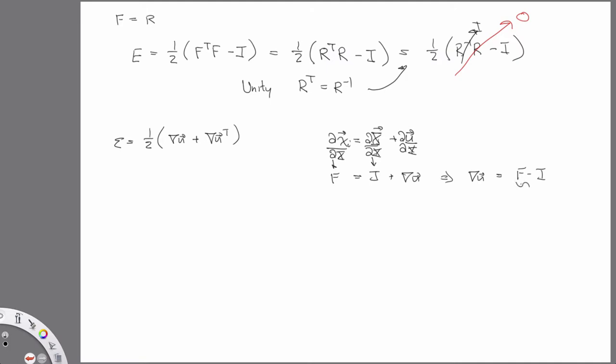So let's plug in this into our equation for small strain. So you have one half times F minus I plus F minus I transpose, which is equal to one half times F minus I plus F transpose minus I, which is equal to one half F plus F transpose minus two I.